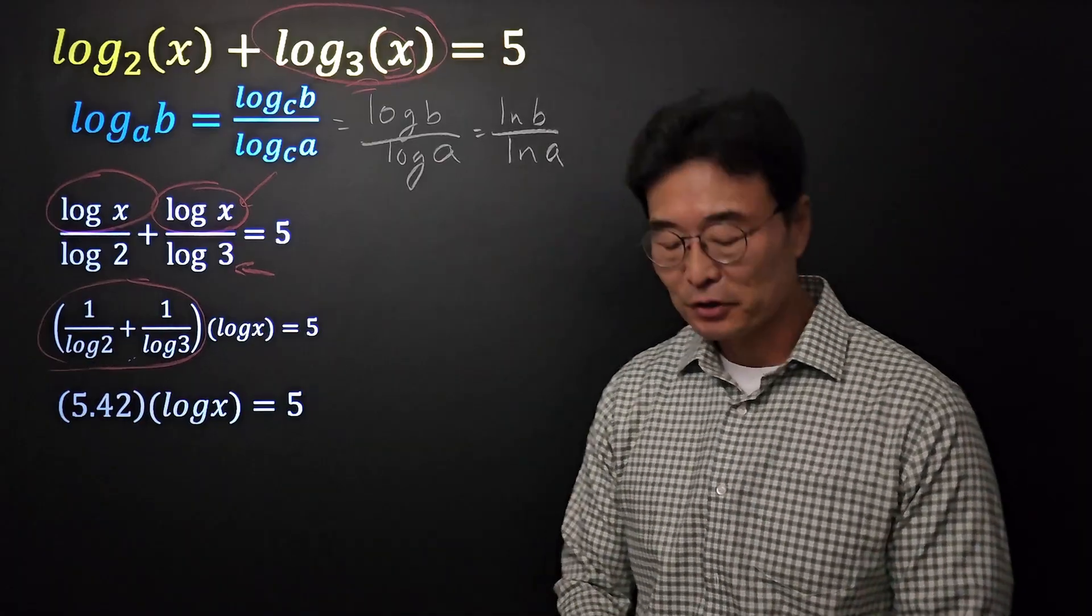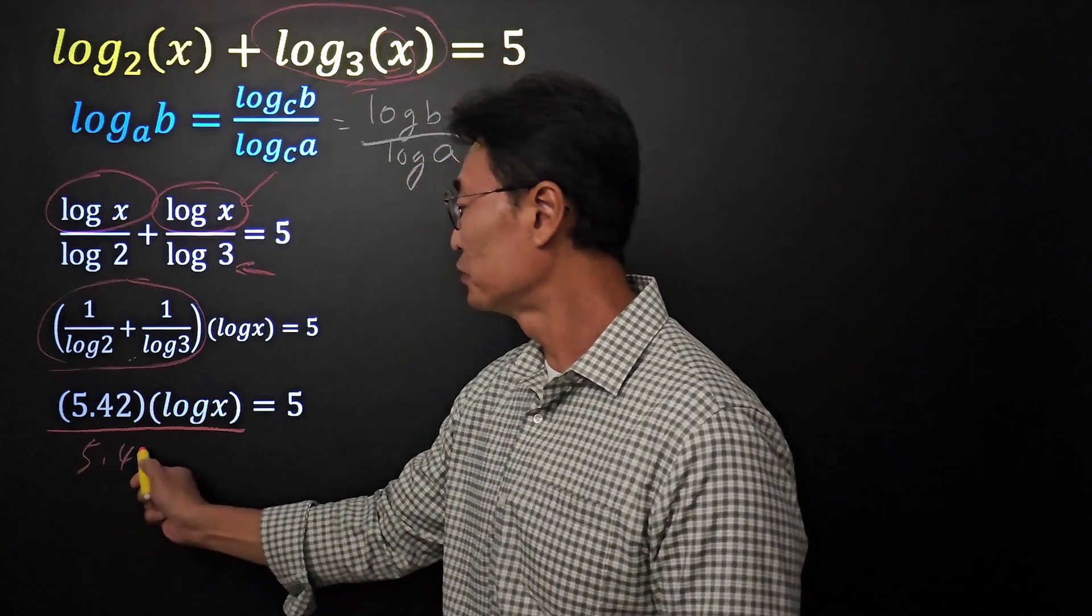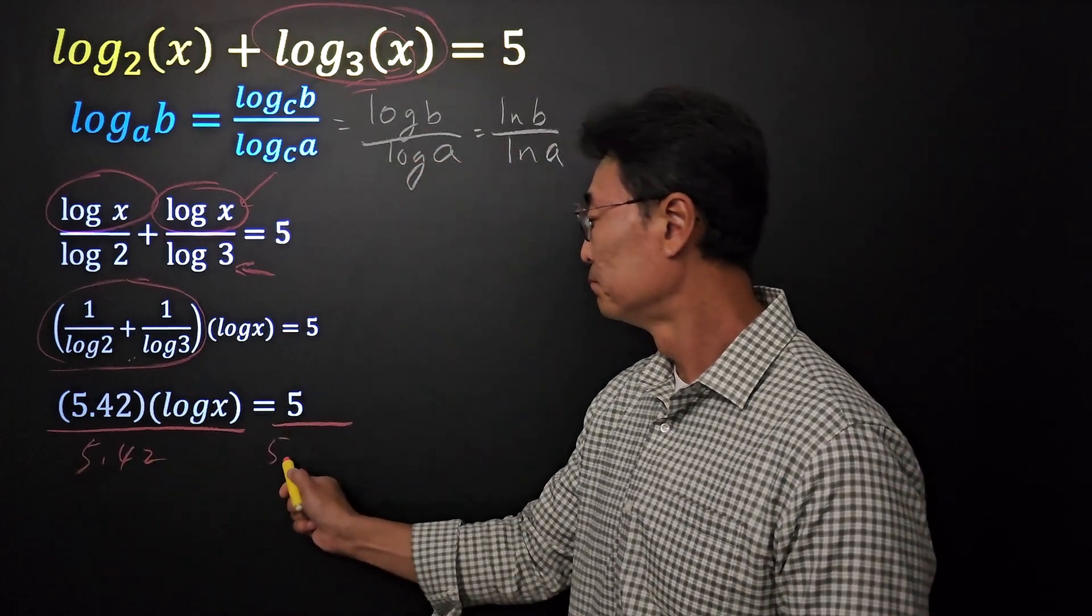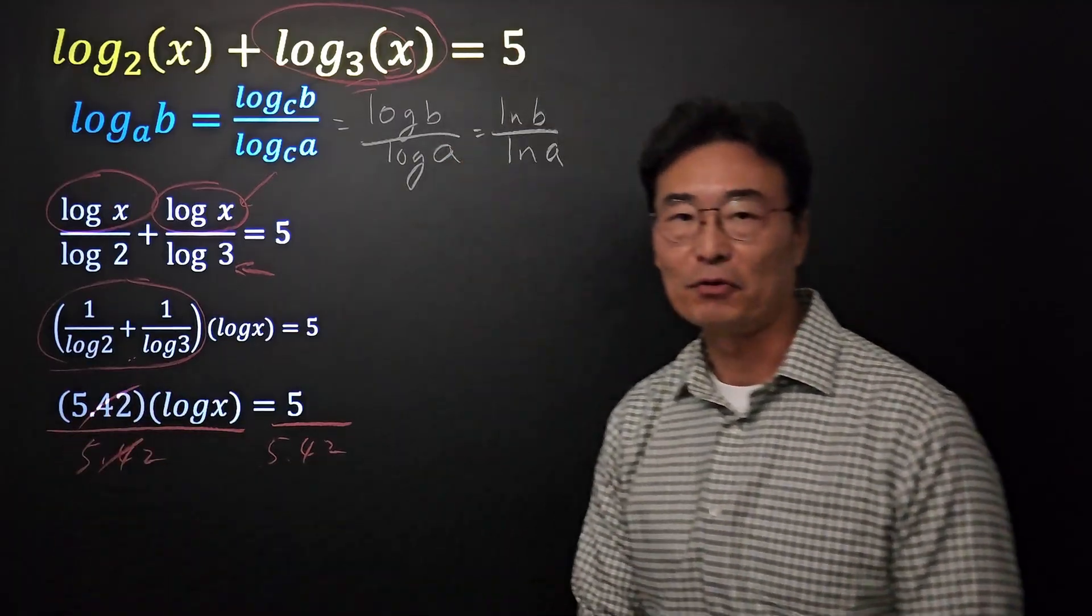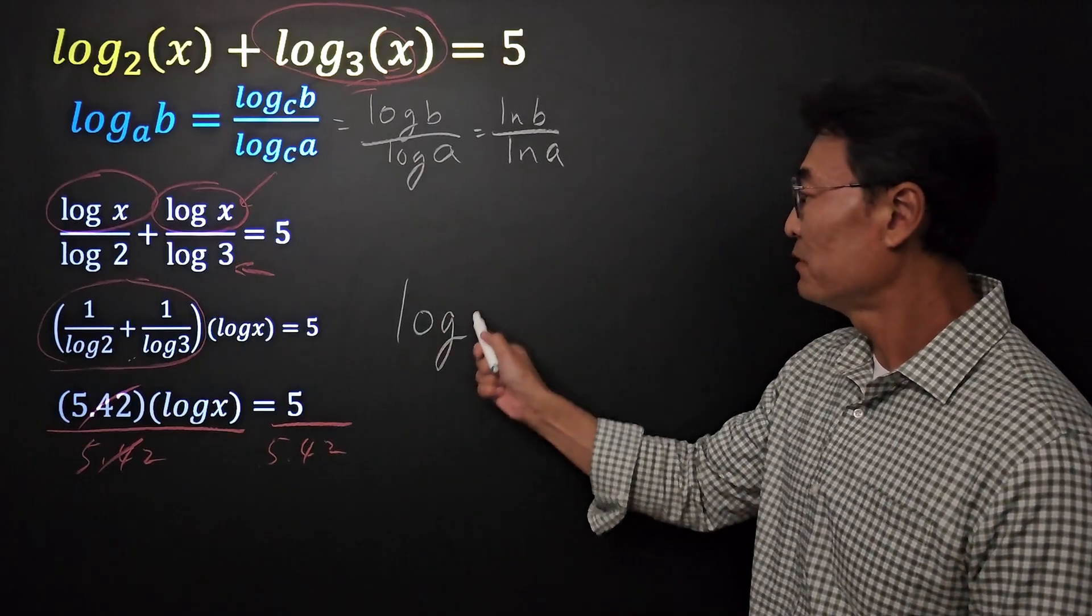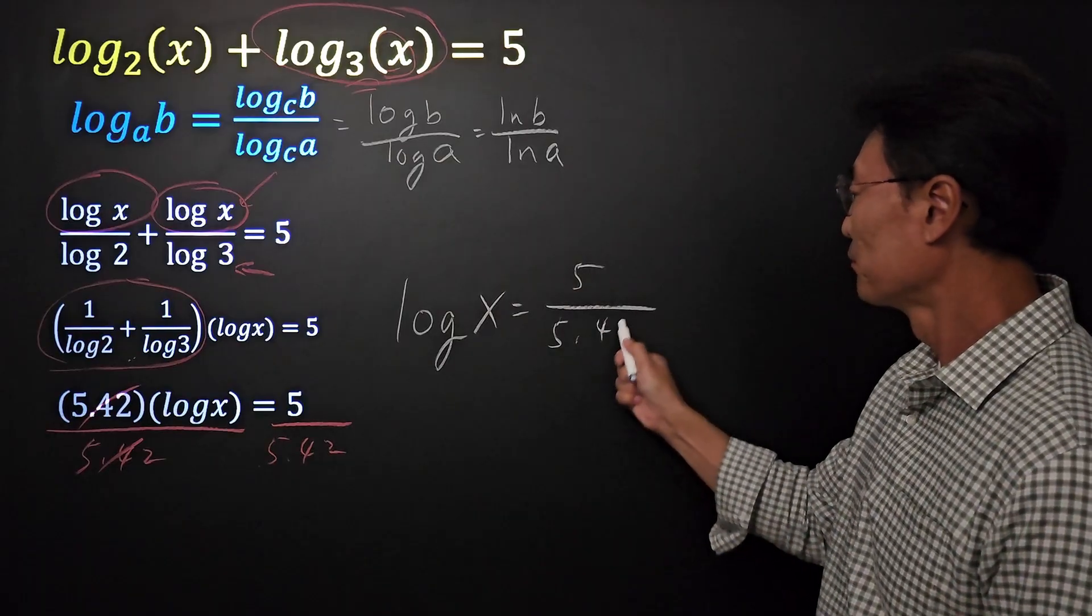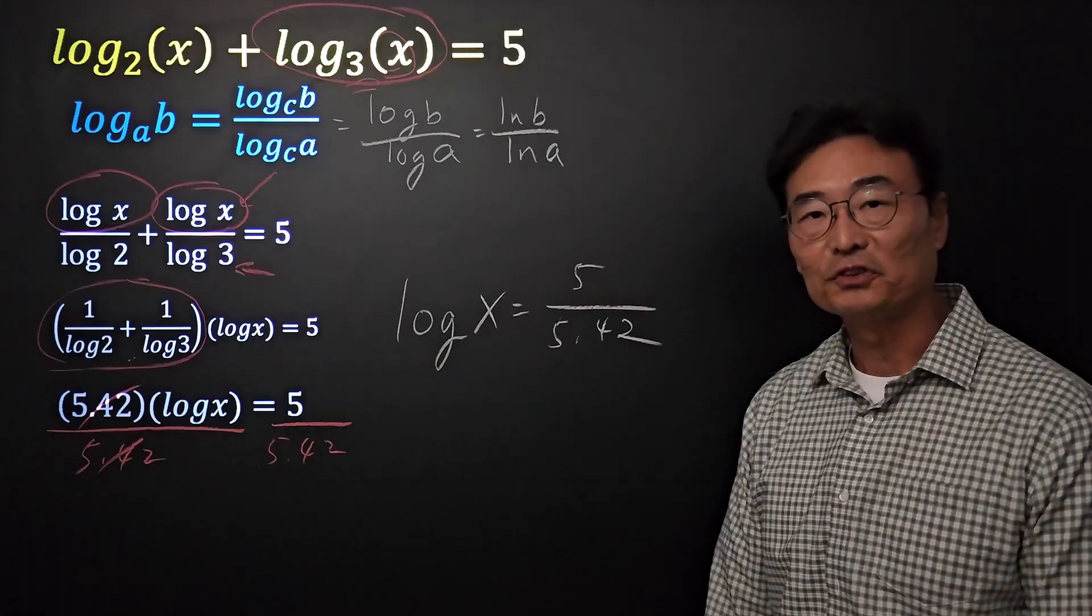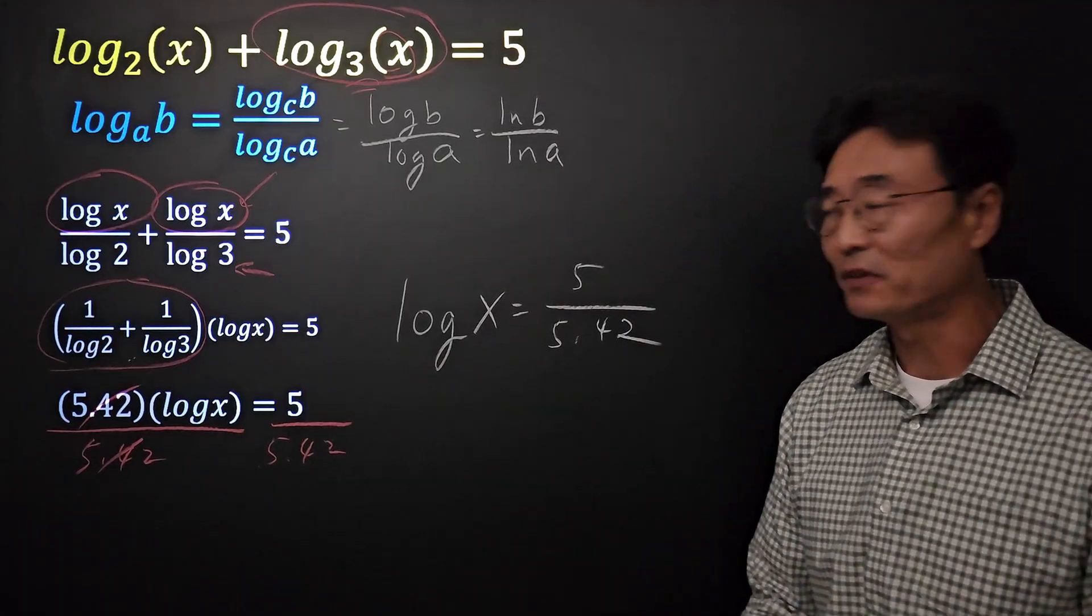And next, what we're going to do is just go ahead and divide it by 5.42 on the left and 5.42 on the right to get rid of that 5.42. We now have log of x equals 5 over 5.42. And then we're going to rewrite this log equation into an exponential equation to solve for x.